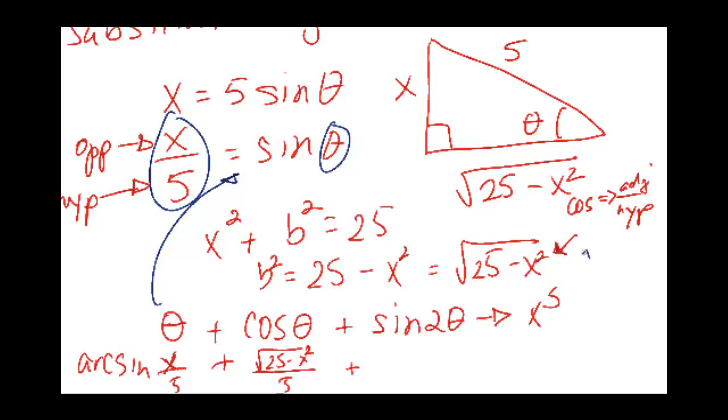What you have to do is remember that sine 2 theta equals 2 sine theta cosine theta. Then we already know that sine theta is arcsine of x over 5.